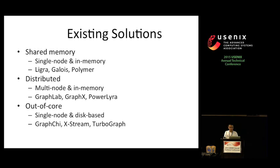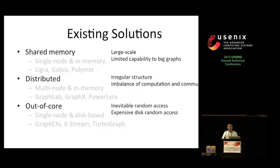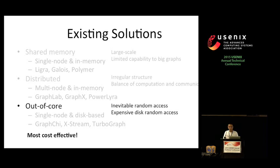They can be roughly classified into three categories: shared memory, distributed, and out-of-core. The three classes of solutions provide different features and face different challenges as well. Shared memory solutions are easy to use and deploy, but the capability is limited by the memory capacity of a single machine. Distributed systems can scale to solve large graphs but often need to resolve the imbalance problem which is found in many real world graphs. And for out-of-core systems, the inevitable random access is the main challenge we are facing. Among all three categories, out-of-core is obviously the most cost effective one due to the fact that disks are several orders cheaper than memories in terms of capacity. Thus, our work concentrates on how to improve out-of-core graph systems.